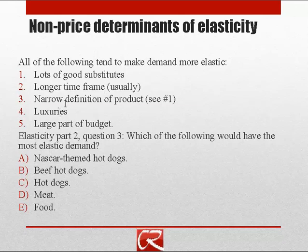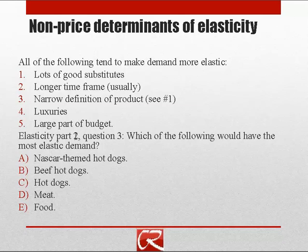Luxury goods are goods that people don't feel they absolutely need, and so when the price of a luxury good goes up, people cut back on their purchases much faster than they do on necessities. When things are a large part of the budget, a price change quickly makes it very difficult to even afford the increased price, so people tend to respond more rapidly to price changes. There's an example question here addressing one of these criteria for you to work through.